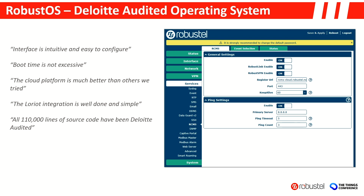Within all Robustel products, there is a Linux-based operating system called RobustOS, developed around five or six years ago in-house at Robustel HQ. The developer and his team responsible for the 110,000 lines of source code are still within the business, building more new products on the platform. Five years of bug fixes means it's a pretty impressive, stable product, and it has been Deloitte audited and pen tested by various organizations for security and backdoors.